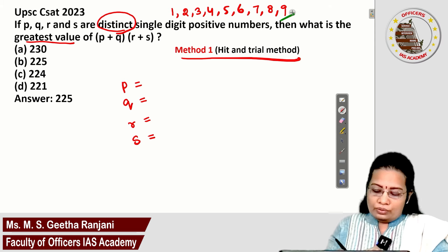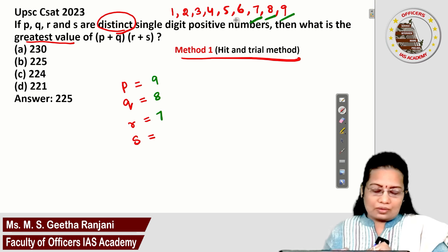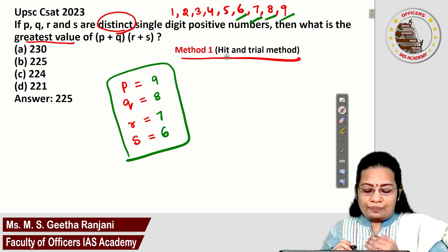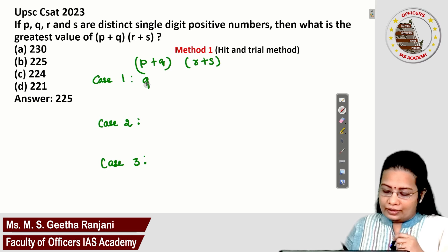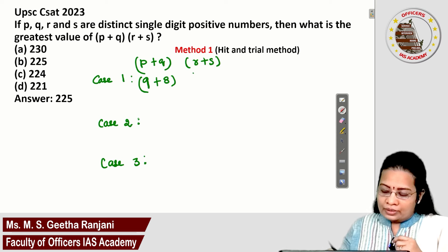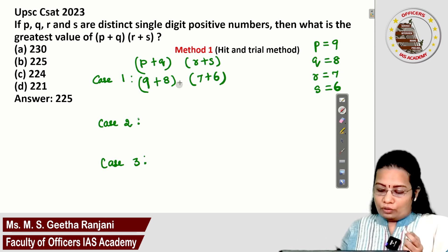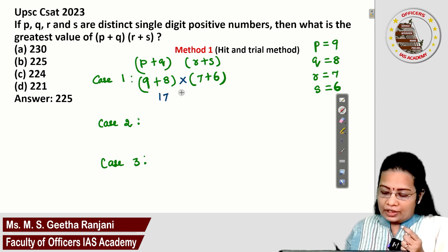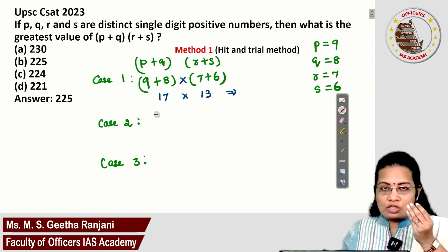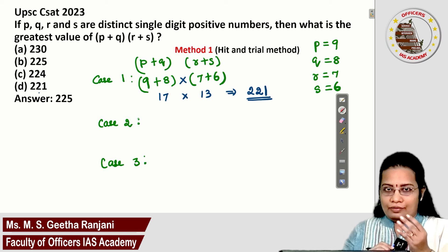Under Case 1, I assign P=9, Q=8, R=7, S=6. Checking their product: (9+8) × (7+6) = 17 × 13. Calculating: 10 times 17 is 170, plus 3 times 17 is 51, giving a total of 221. In the options you can see option D which has 221. Let's check further cases to find the greatest value.